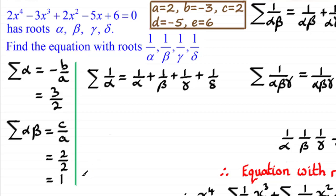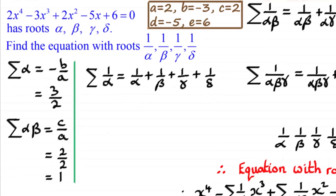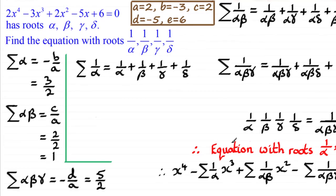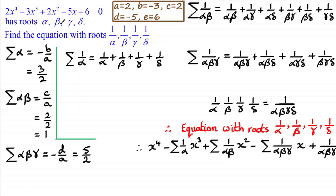The sum of the product triples of roots, sigma(αβγ), equals minus d over a. Substituting d = −5 and a = 2, you end up with 5/2. And lastly, the product of the roots alpha·beta·gamma·delta equals e over a. With e = 6 and a = 2, that gives 3.